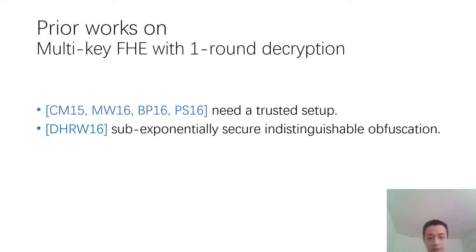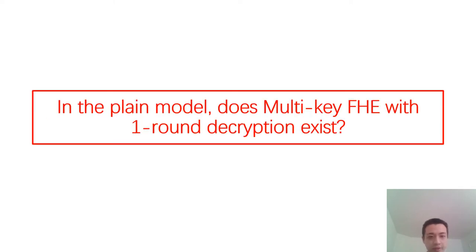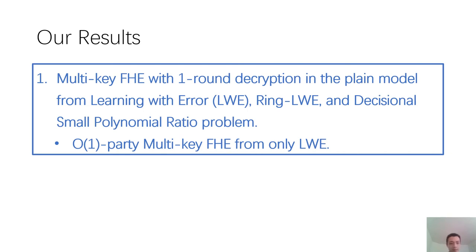On the prior works of multi-key FHE with one-round decryption, we find that all existing constructions either need a trusted setup or need some strong assumptions, such as sub-exponentially secure indistinguishable obfuscation. So we ask the following natural question: in the plain model, does multi-key FHE with one-round decryption exist? Our first result is a construction of multi-key FHE with one-round decryption in the plain model, from learning with errors, ring learning with errors, and a decisional small polynomial ratio problem. We also achieve a constant number of party multi-key FHE from only LWE.